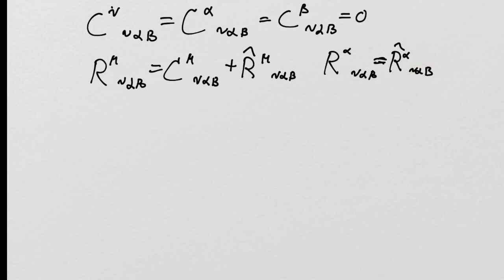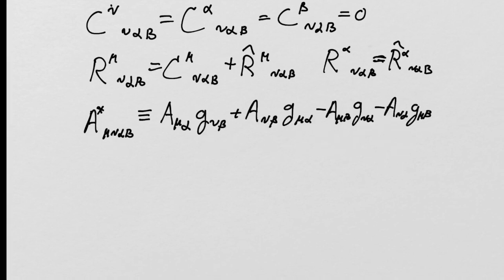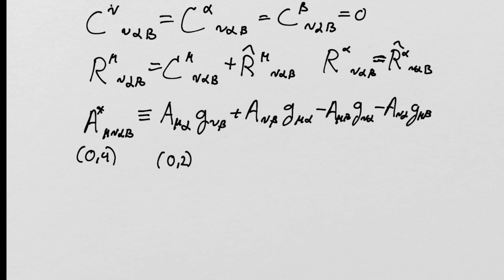To begin this, we're going to use an observation that somebody discovered while studying tensors. We are going to create an object called A-star, which is a rank (0,4) tensor, created out of the metric and a rank (0,2) tensor A. For any (0,2) rank tensor A, we can create this (0,4) rank tensor by constructing this structure with the metric.